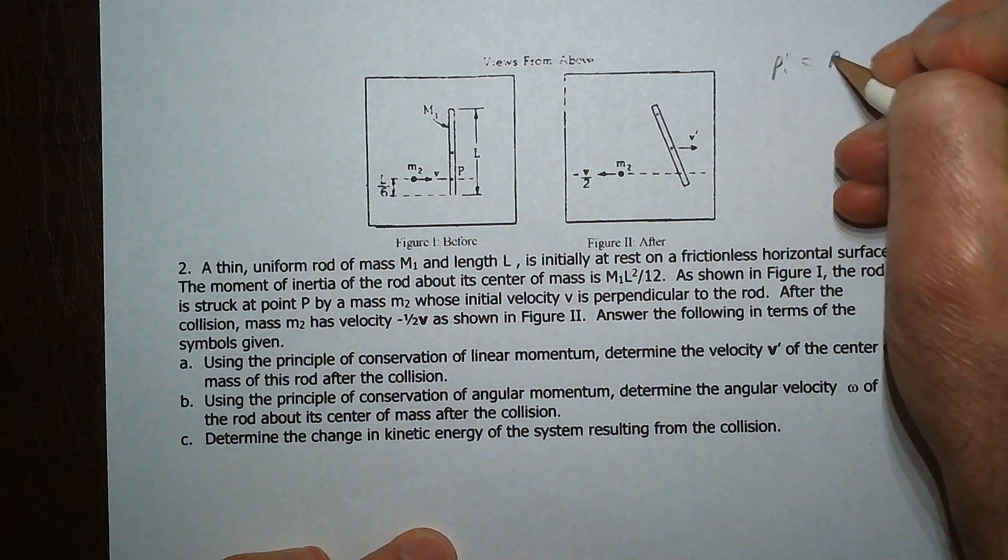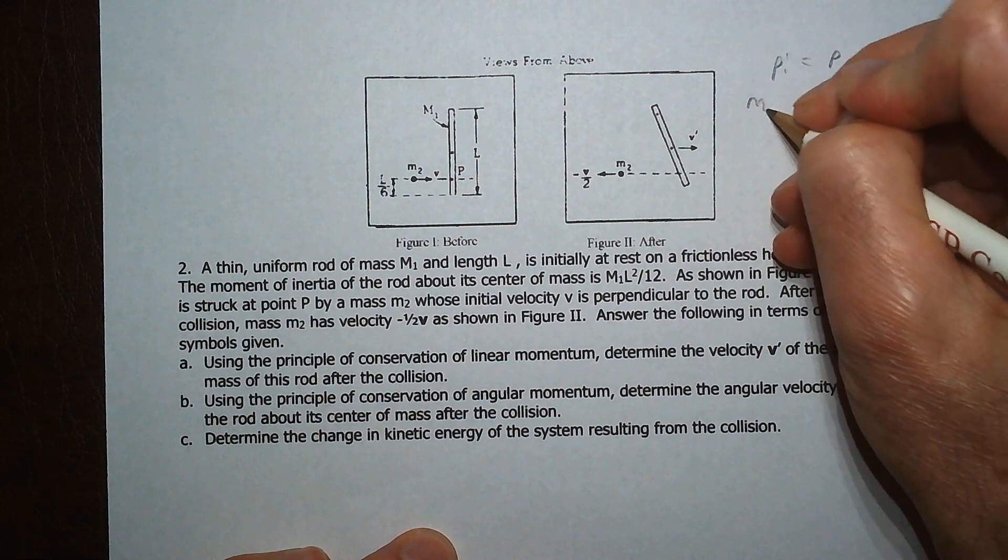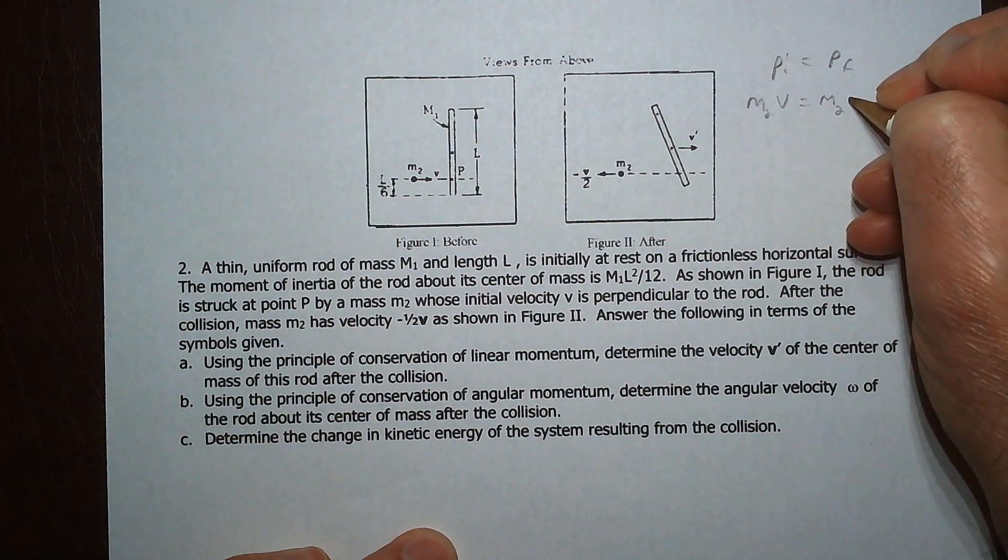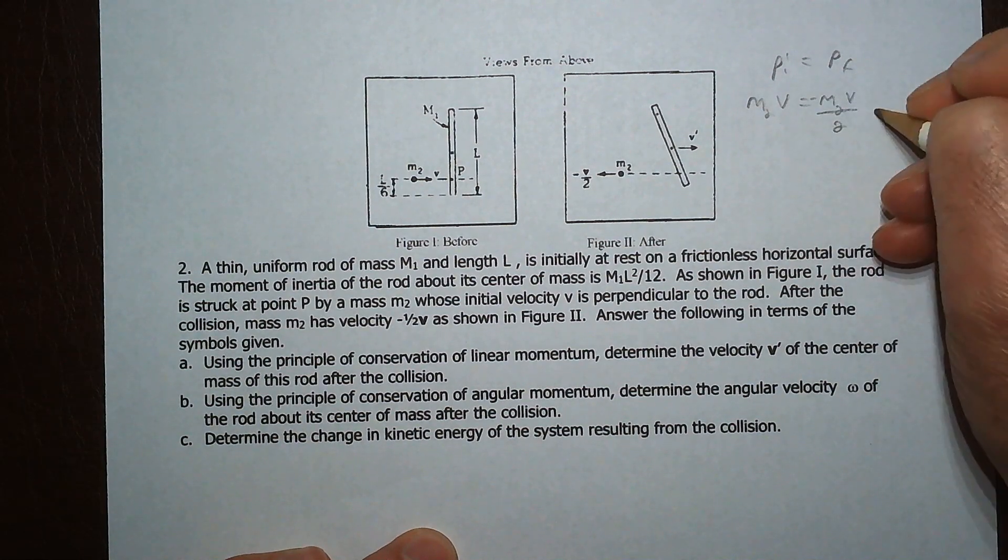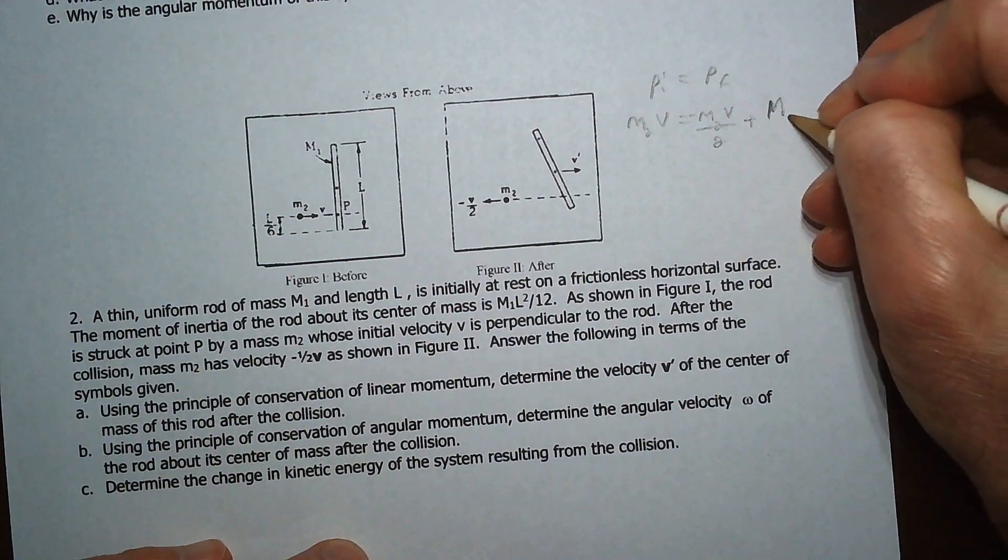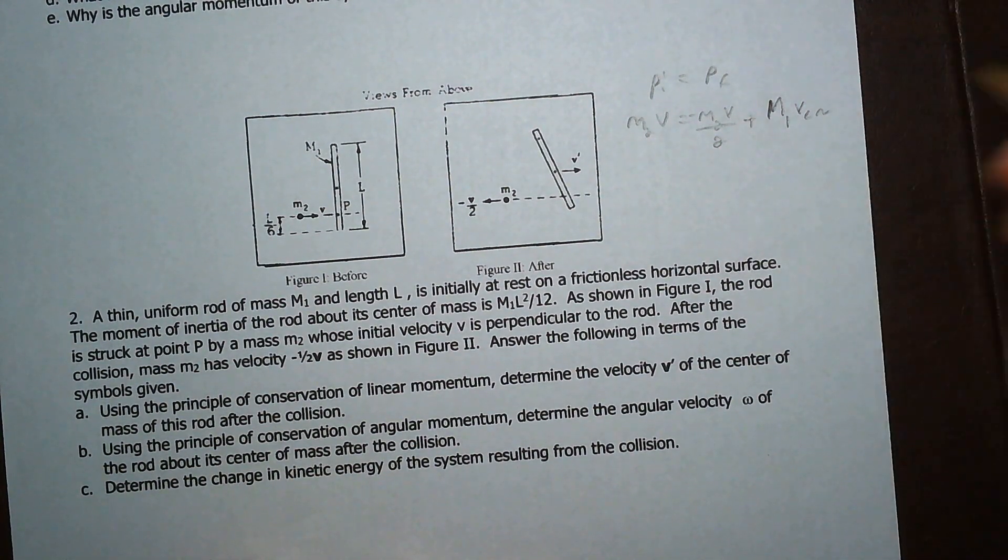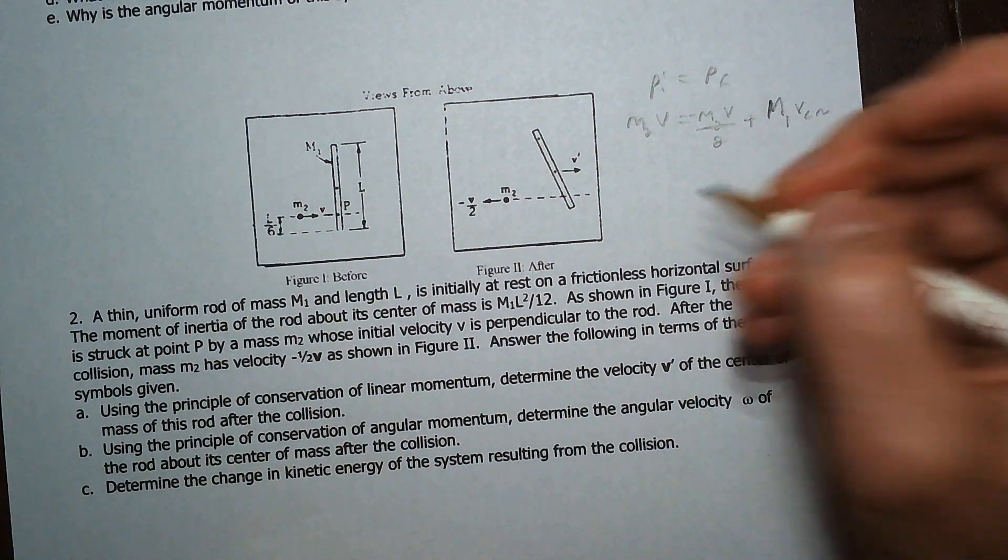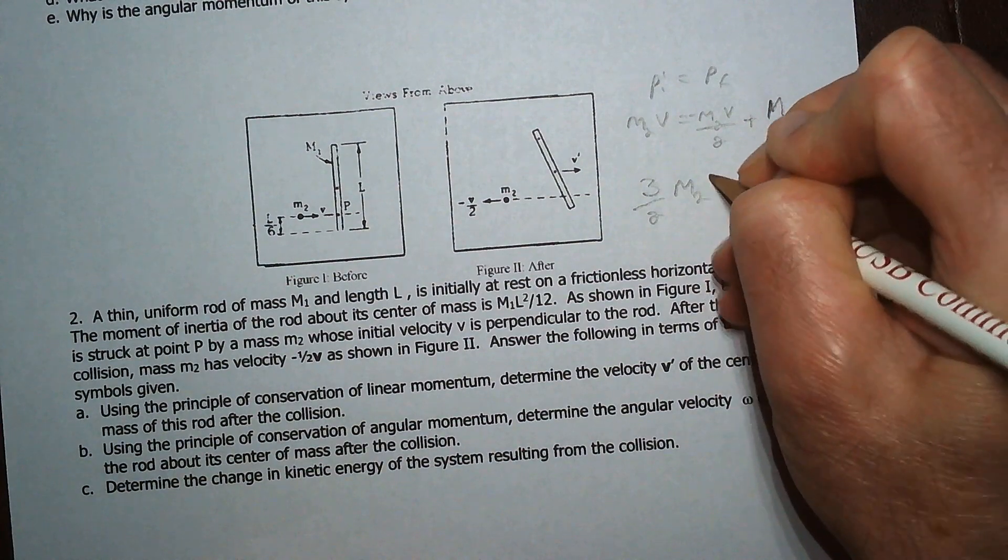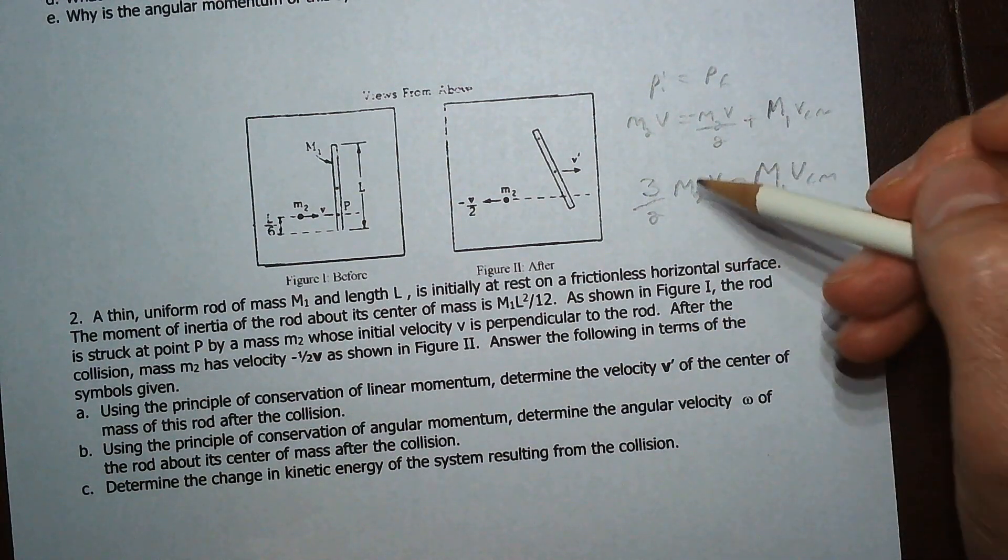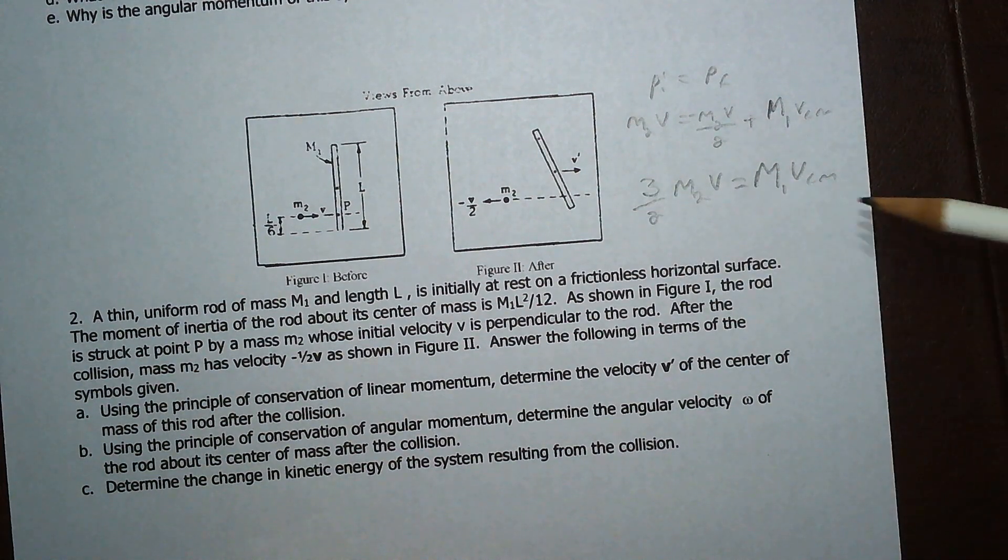So Pi has to be equal to Pf. So that would be M2V has to be equal to M2V over 2, and that's negative because it's an opposite direction, plus mass 1 times the velocity of the center mass. So that's going to be 2 halves, 3 halves, so 3 halves M2V equals M1Vcm. And so 3 halves M2V divided by M1 would be the velocity of the center mass.